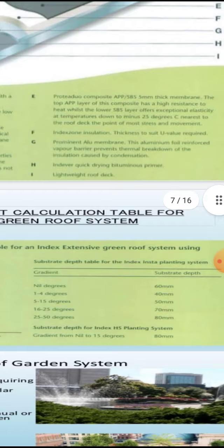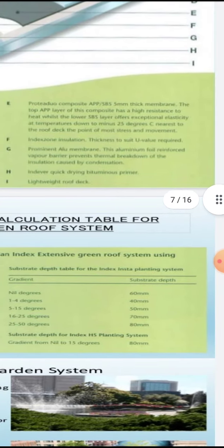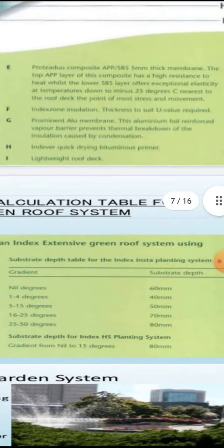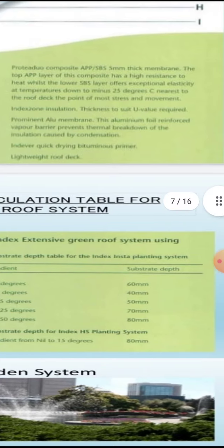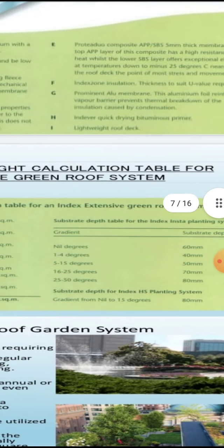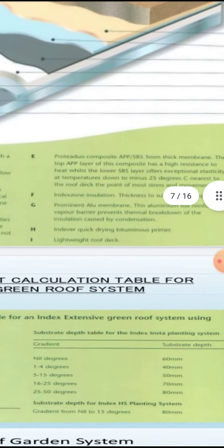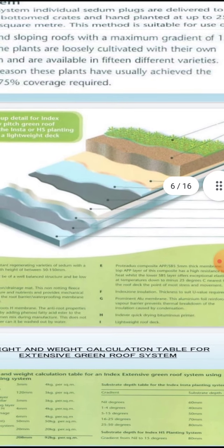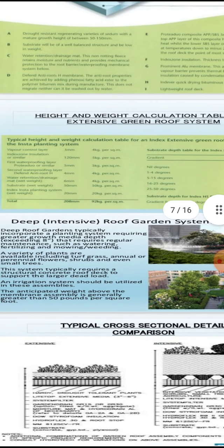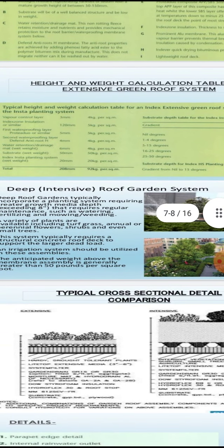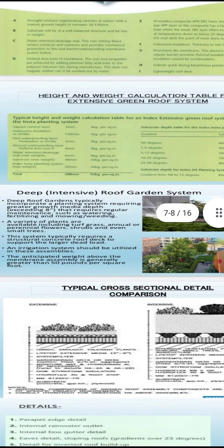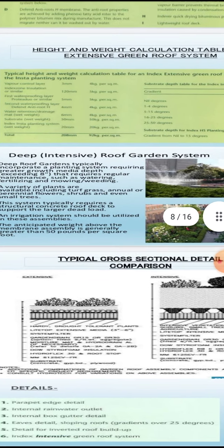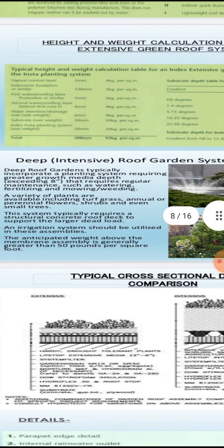'E' is generally used for protection or cultivation at an angle of 25 degrees. Remember this diagram for the terrace garden — different structures are there. Height and weight calculations are given as per the table for the extensive green roof system.